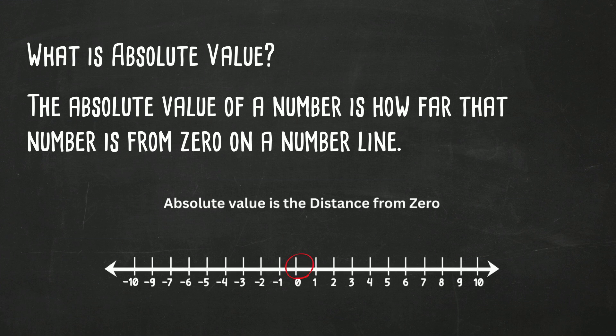For example, the number five, if you count, is five units away from zero. One, two, three, four, five. So the absolute value of five is five.